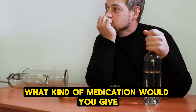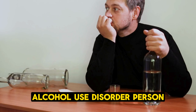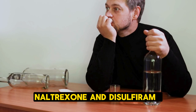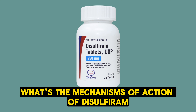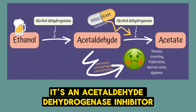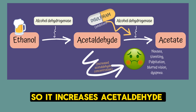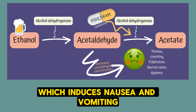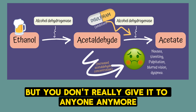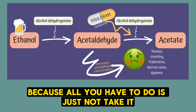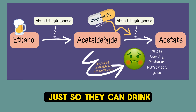What medication do you give for alcohol use disorder? Naltrexone and disulfiram. Mechanism of action of disulfiram: it's an acetaldehyde dehydrogenase inhibitor, so it increases acetaldehyde, which induces nausea and vomiting. It's very unpleasant, but patients can simply choose not to take it.